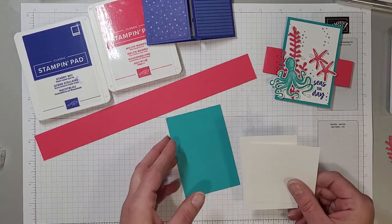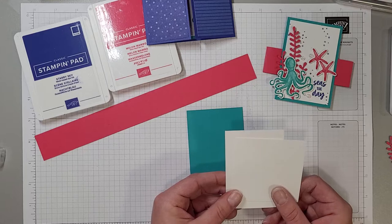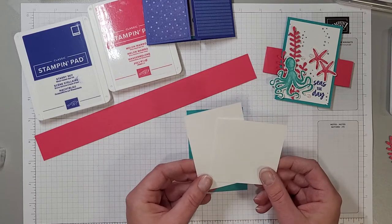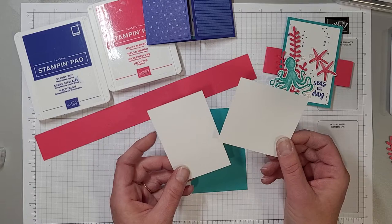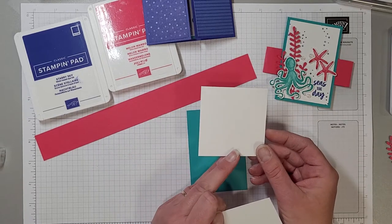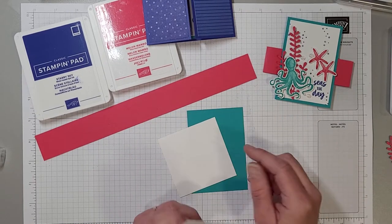And then I've got basic white. I've got a three by three scrap here which is going to be for stamping and then I've got a two and a half by three and three quarter piece that's going to get layered on my two and three quarter by four piece of Bermuda Bay.